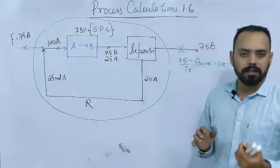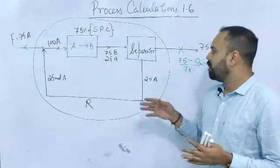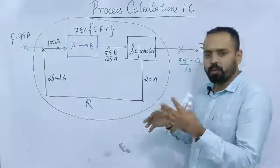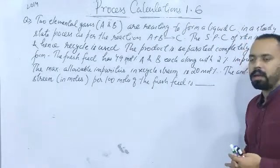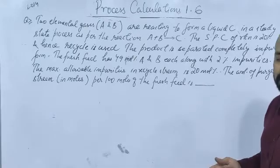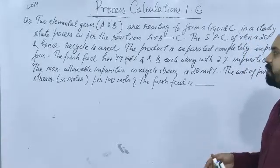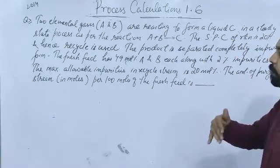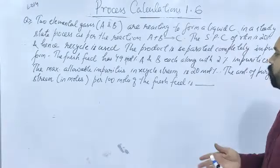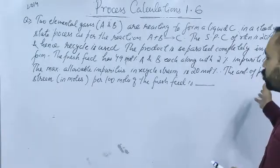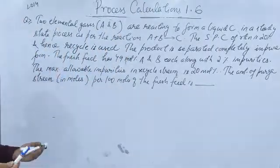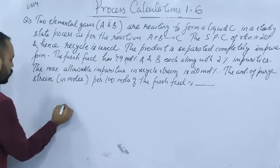In GATE exam problems of this kind, whenever you go through previous year problems, the question always contains a reactor and separator only. Here is a GATE 1990 problem: Two elemental gases A and B are reacting to form a liquid C in a steady-state process as per the reaction A + B giving C. The single pass conversion is 20% and hence recycle is used. The product is separated completely in pure form. The fresh feed has 49% A and 49% B each, along with 2% impurities. The maximum allowable impurities in the recycle stream is 20 mole percent. Find the amount of purge stream per 100 moles of fresh feed.